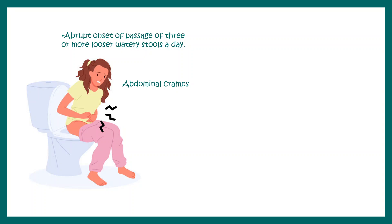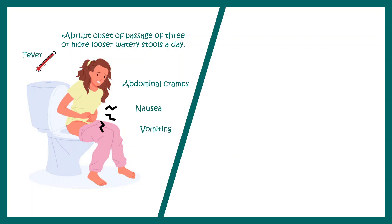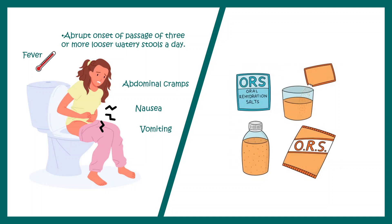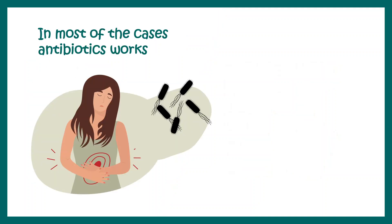Treatment options include several antibiotics. Bacterial food poisoning is the most common type, and symptoms can be relieved with antibiotics. ORS (oral rehydration salts) should also be used, as a lot of fluid is lost during diarrhea — replenishing that fluid is really important, since diarrhea is a key cause of death in many developing countries.